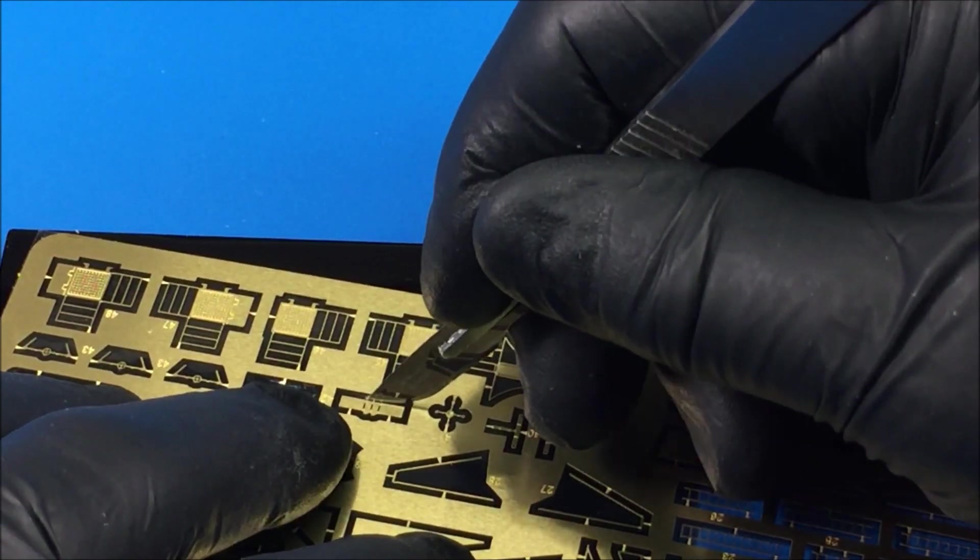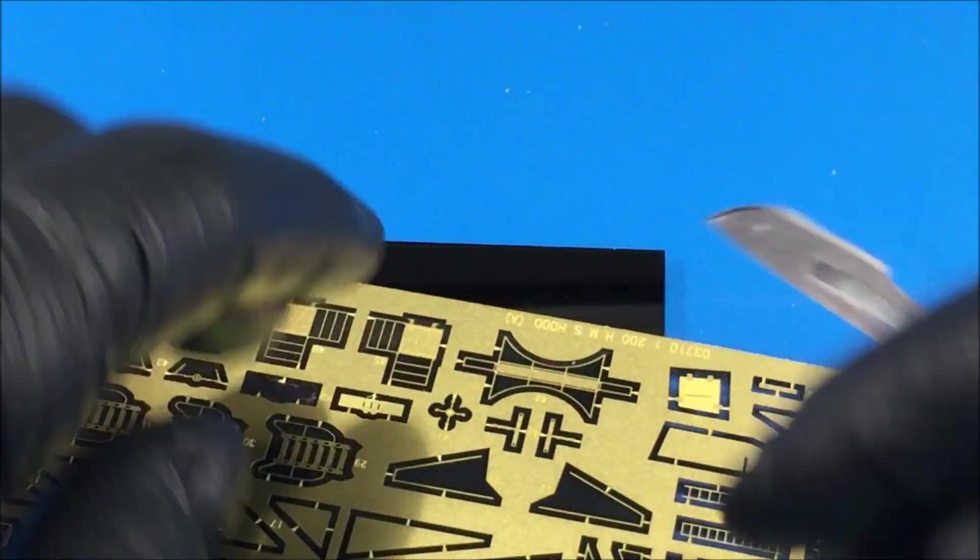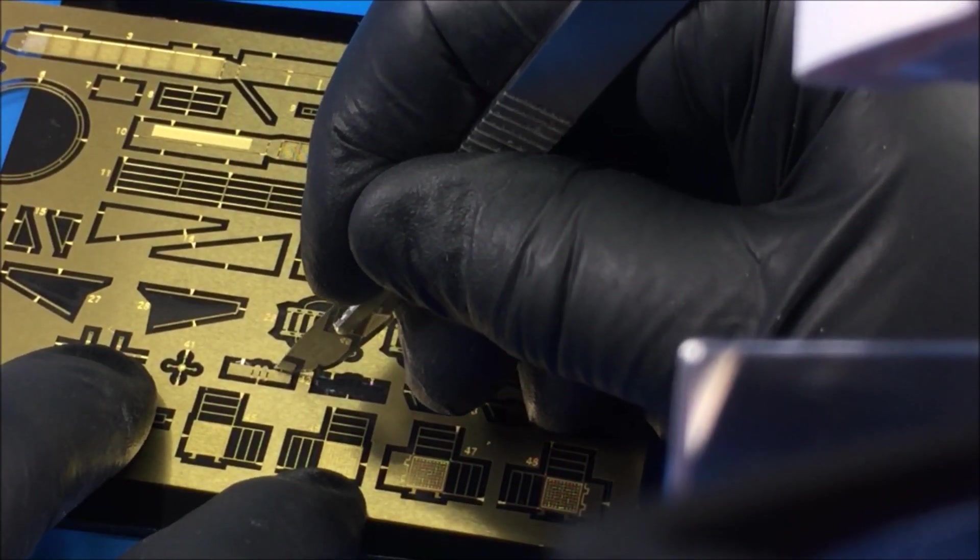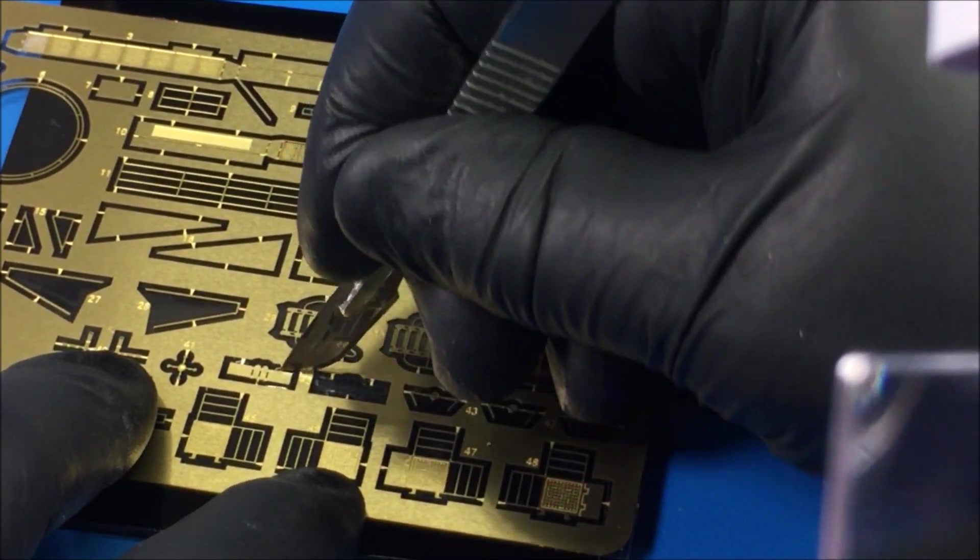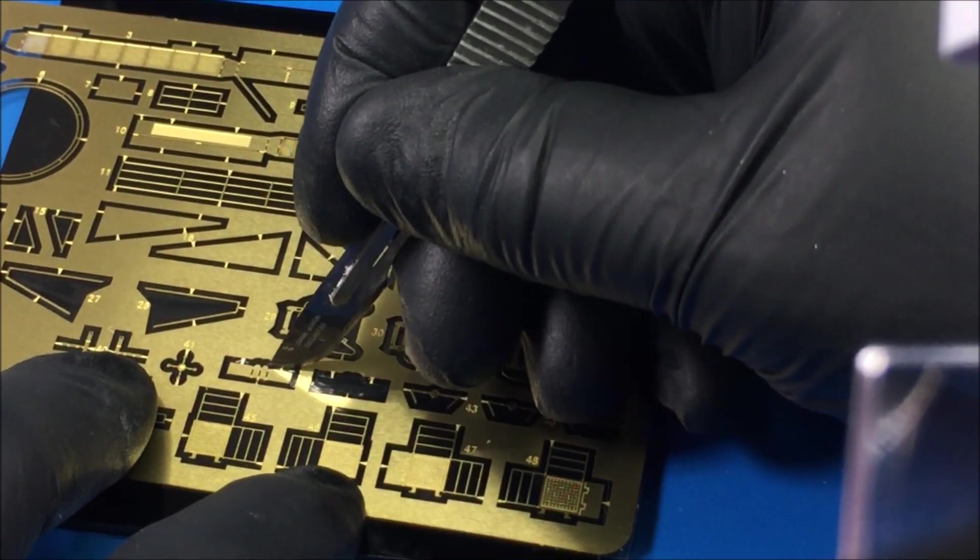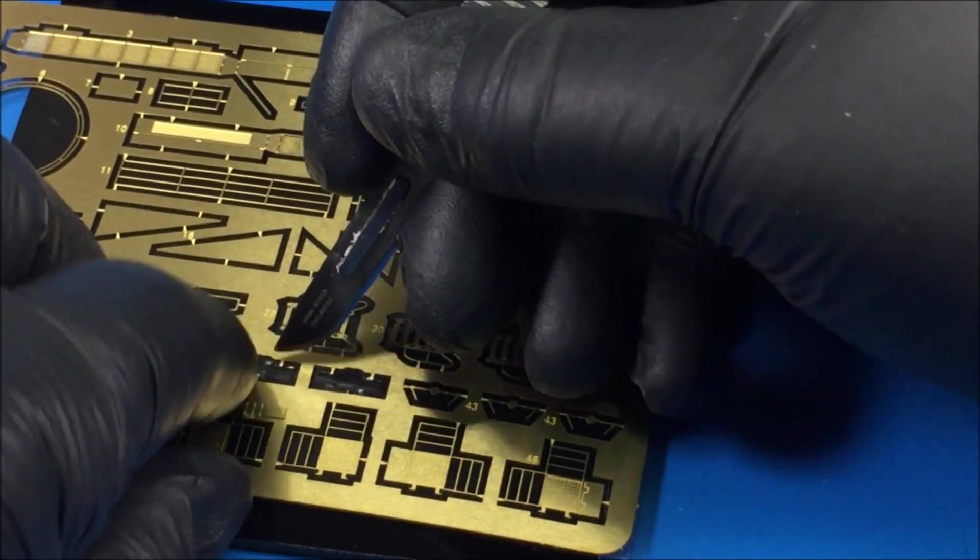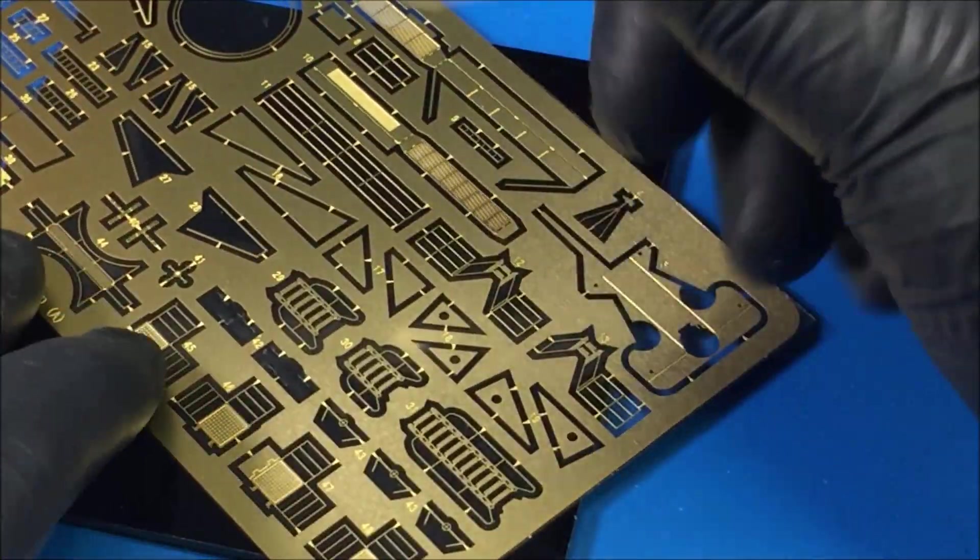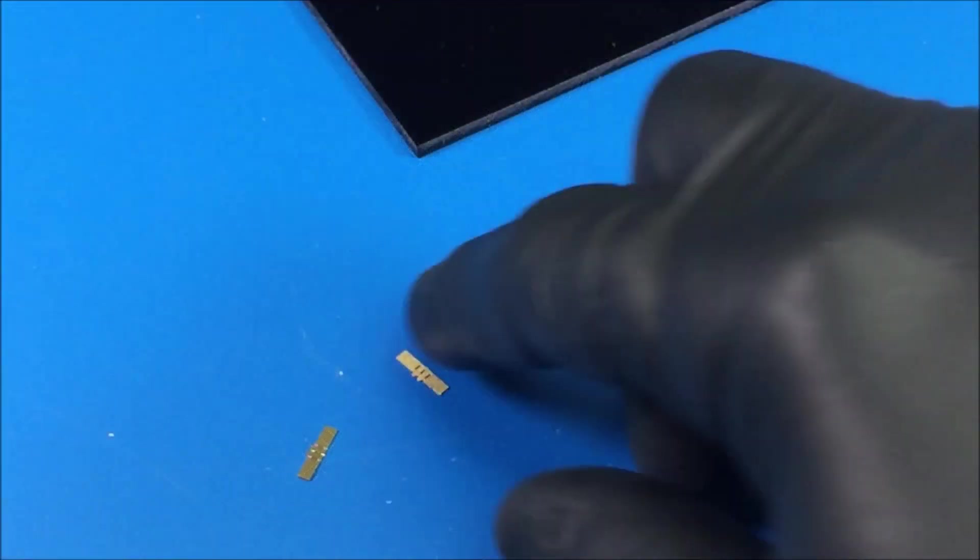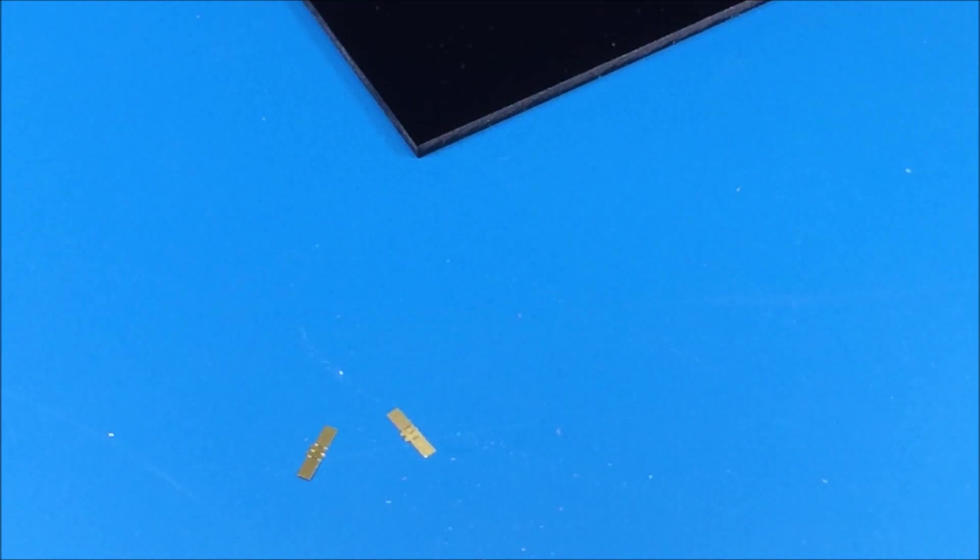You can use a regular exacto blade or a straight blade or a curved blade, doesn't really matter, whatever your preference is. I use both sometimes. That's how you get the part off the carrier.